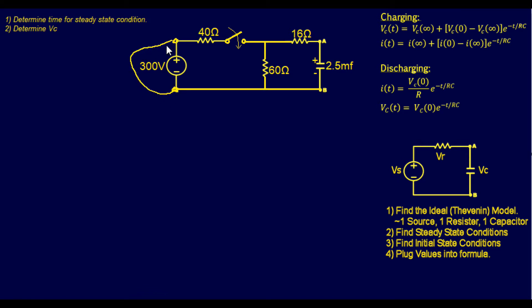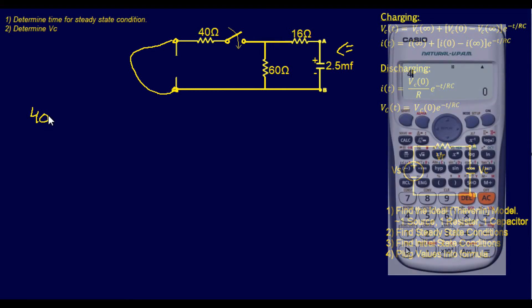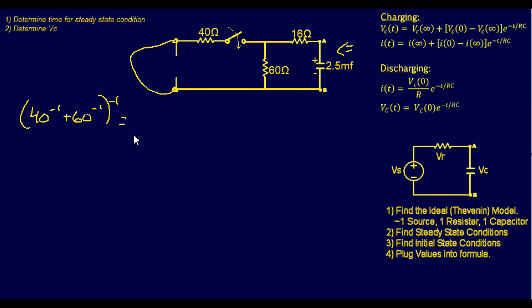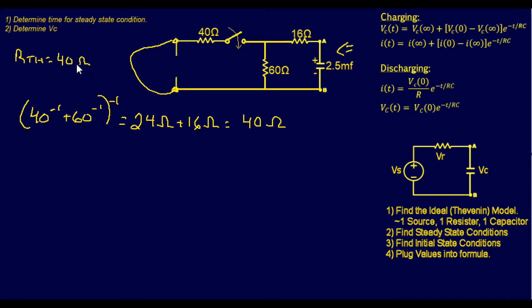To find R_Thevenin, we short the voltage source. Looking from points A and B with the source shorted, the 60 Ω and 40 Ω resistors are in parallel: (60 × 40)/(60 + 40) = 24 Ω. Then 24 Ω is in series with 16 Ω, giving a total Thevenin resistance of 40 Ω.